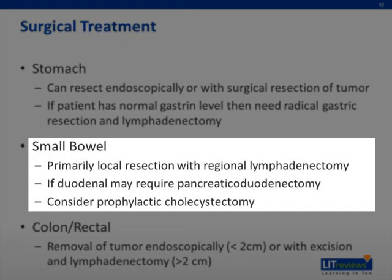When the tumor is in the small bowel, local resection is usually accompanied by a regional lymphadenectomy. In cases of duodenal carcinoid, the location itself usually necessitates a formal pancreaticoduodenectomy. If resecting small bowel carcinoid, one should also consider a prophylactic cholecystectomy. Examination of the entire small bowel is necessary as well during the operation.